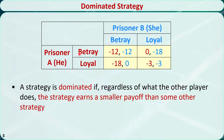For this example, let's take a look at Prisoner A's strategies: Betray or Be Loyal. If B chooses Betray, A should choose Betray as well because he would serve 12 months in prison instead of 18 months. If B chooses Loyal, A should still choose Betray because he could serve 0 months in prison instead of 3 months. So Betray is always a better strategy for A. Similarly, if A chooses Betray, B should choose Betray as well because she would serve 12 months instead of 18 months. If A chooses Loyal, B should still choose Betray because she would serve 0 months instead of 3 months. So Betray is always a better strategy for B. Therefore, Loyal is a dominated strategy for both prisoners.